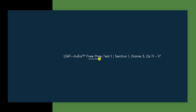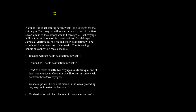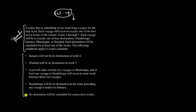I am going to use the free prep test one, section number one, game number three, questions 11 to 17. This is the setup. Every analytical reasoning question starts with a setup where basic information is given. It has two parts: the information and the rules. From the information I need to understand what game we are playing — is it a sequencing game, a grouping game, a combination, or a selection game?